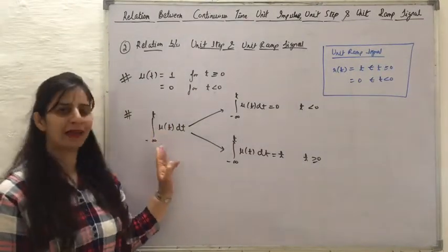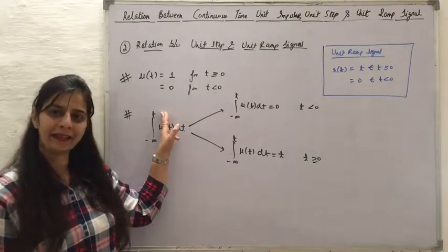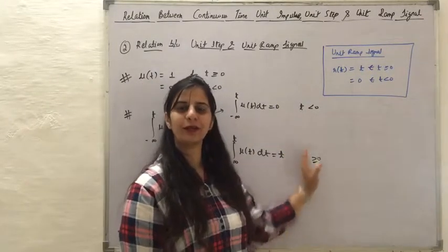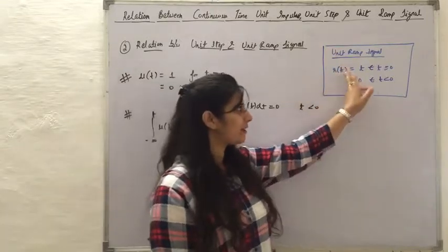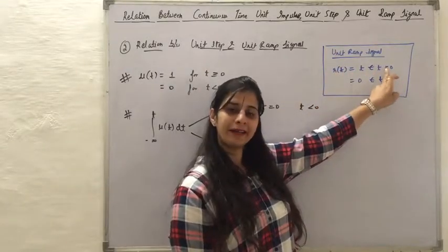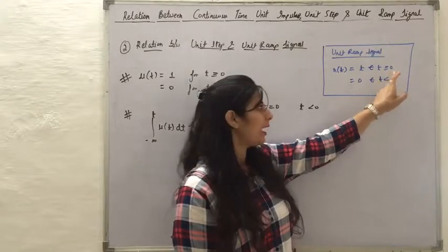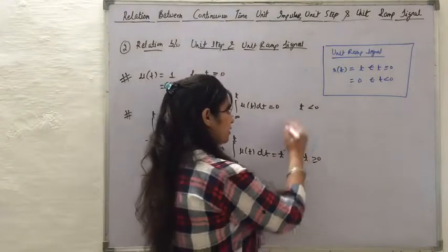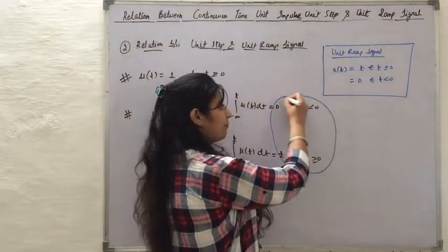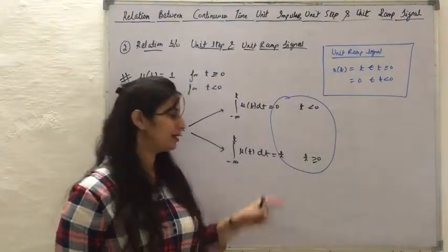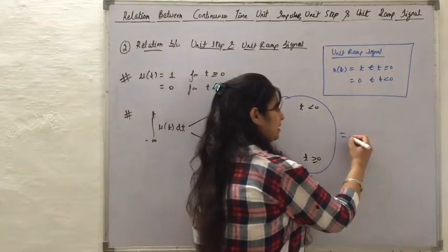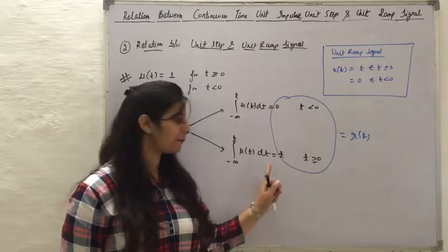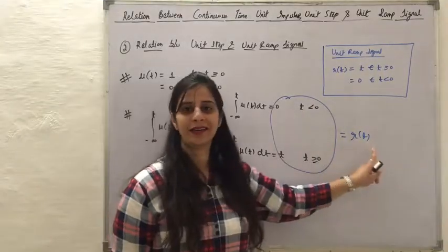This result can be related to the definition of the unit ramp signal. The unit ramp signal r(t) is defined as t for t greater than or equal to 0, and 0 for t less than 0. So this function is equal to r(t). Therefore, when we integrate the unit step signal, we get the unit ramp signal.